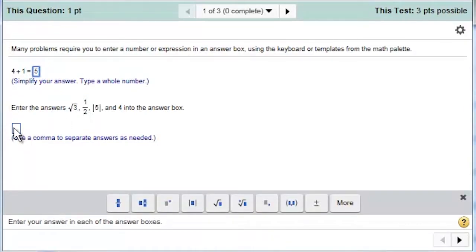If your answer requires math symbols, such as square root or absolute value, you will use the Math Palette toolbox at the bottom of the screen. Click on the symbol that you need, square root, type the number three, and then submit your answer.